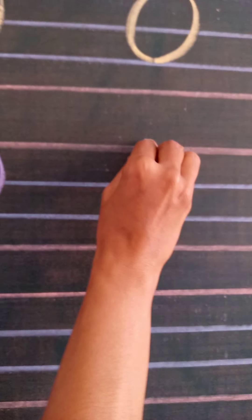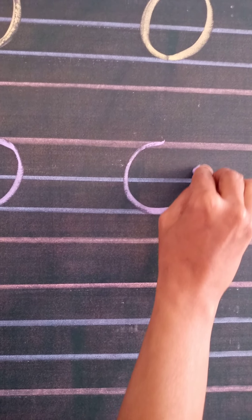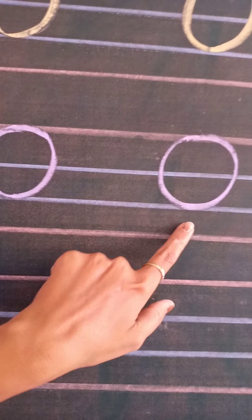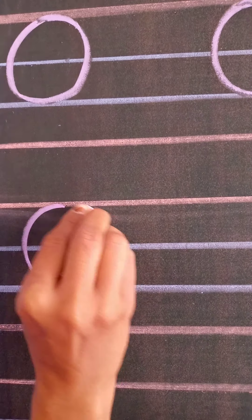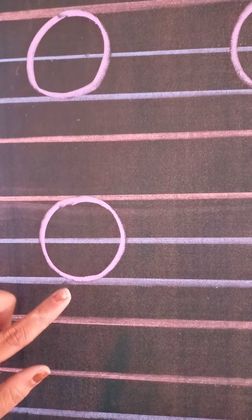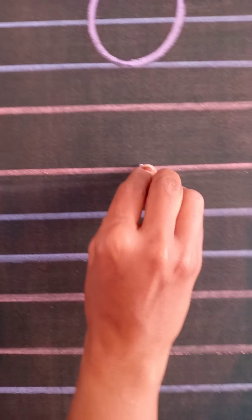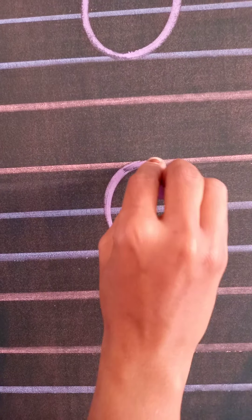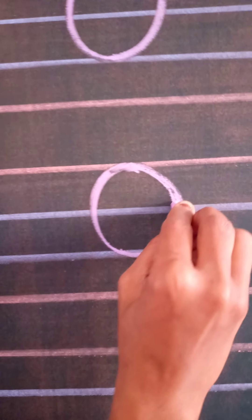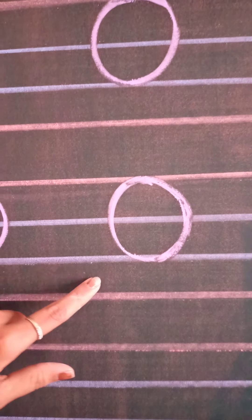Again, make a curve, go down, go up slowly and touch the red line. You have to touch the second blue line also. So this is letter O. Again, from the red line, go up from the red line till the second blue line — letter O. Start from the red line, go up slowly and make a curve. This is letter O.